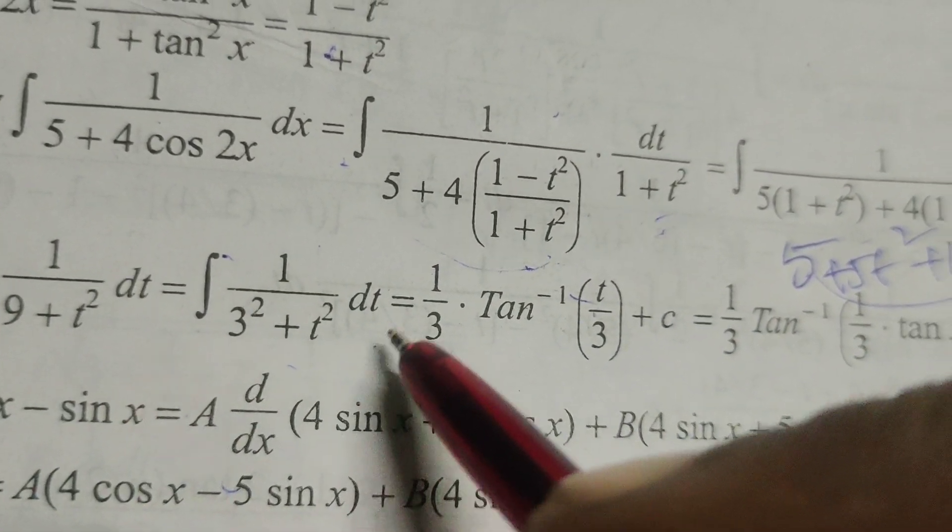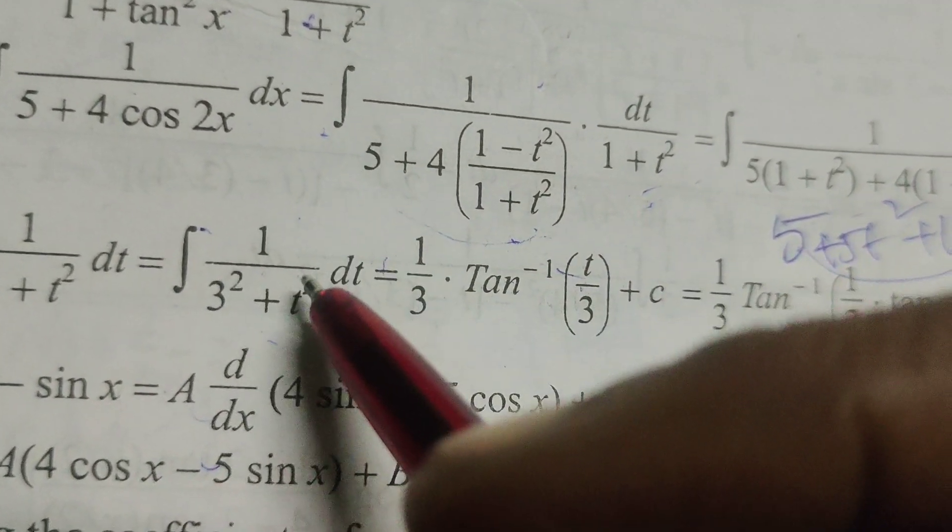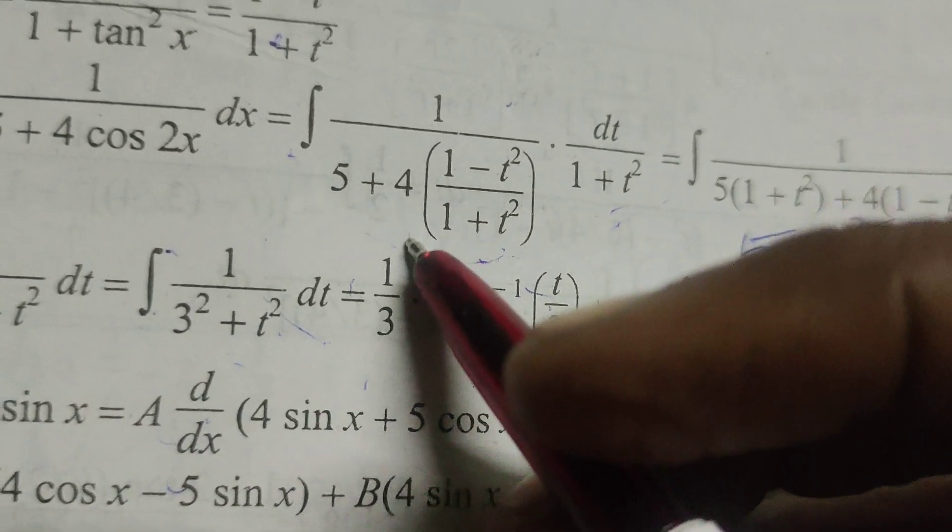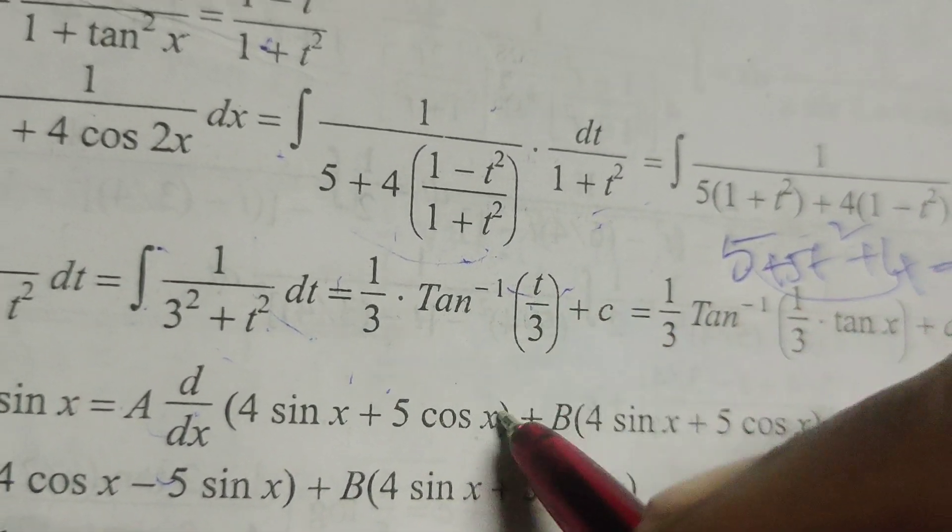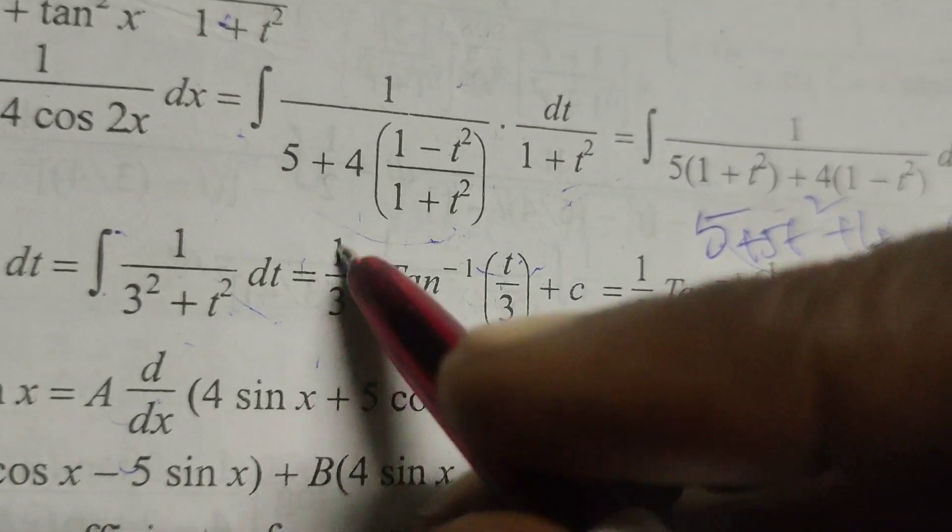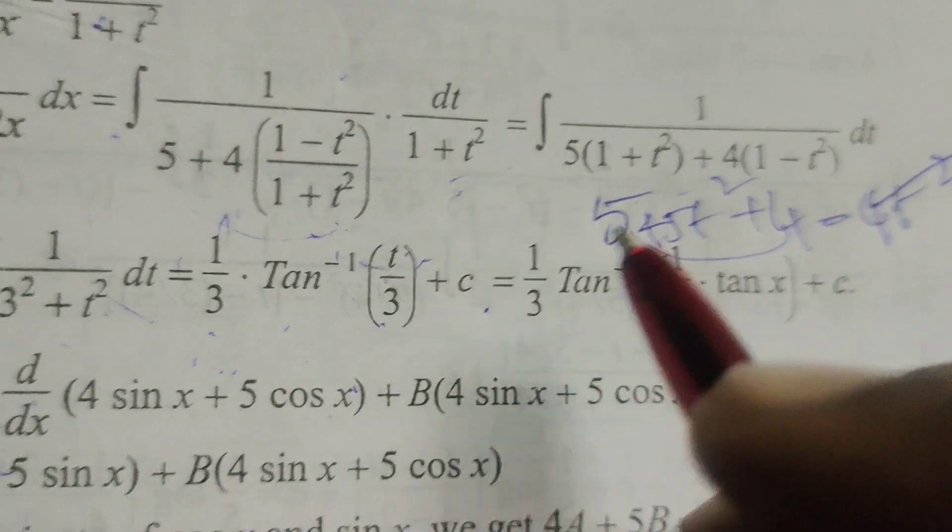That is integral 1 by 3 square plus t square dt. Now using the formula: integral of 1 by x square plus a square, where x means t, a means 3, equals 1 by a tan inverse of x by a. Therefore, 1 by 3 tan inverse of t by 3 plus c.